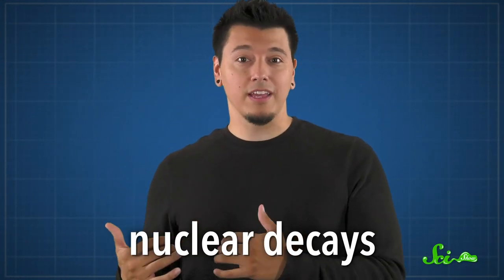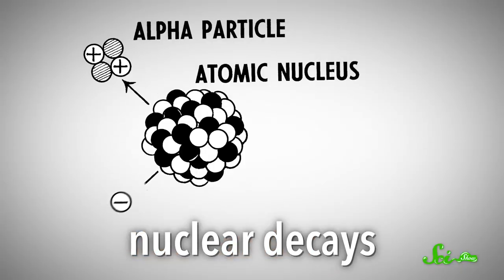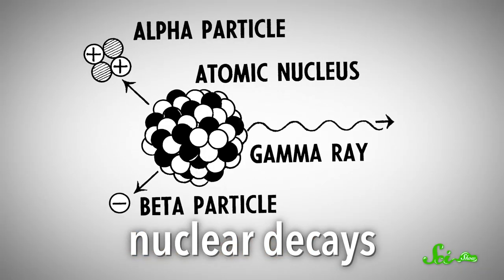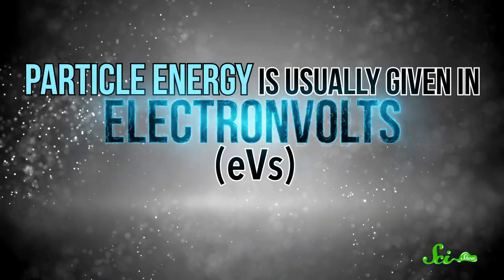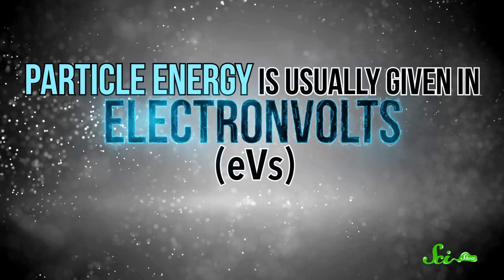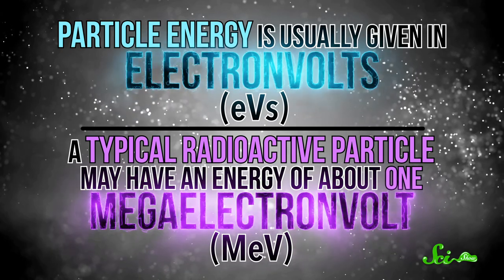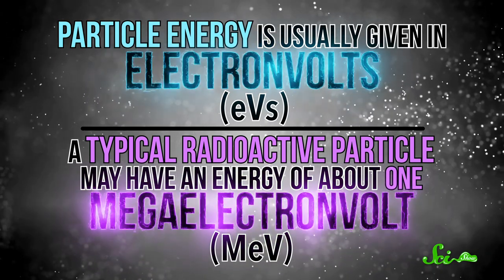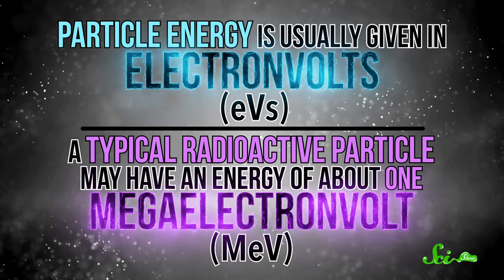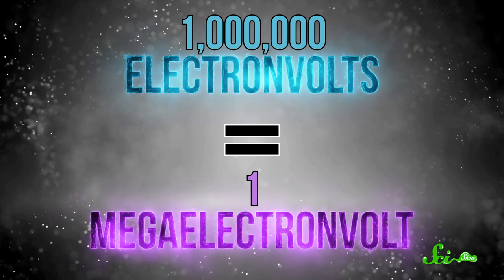The ionizing radiation we worry about most comes from nuclear decays — that's when an atom breaks apart into smaller chunks, releasing other particles in the process. And how easily these particles can ionize is, in part, determined by their energy. So that's where we get to our first radiation units. Particle energy is usually given in units called electron volts, or eVs. A typical radioactive particle may have an energy of about one mega-electron volt, or MeV — that's a million eVs.